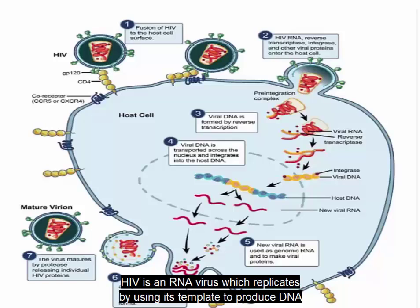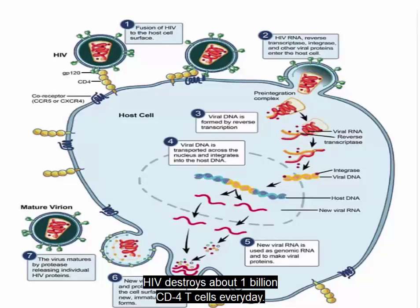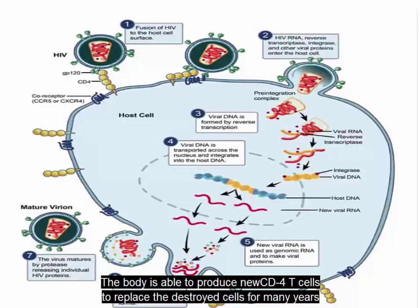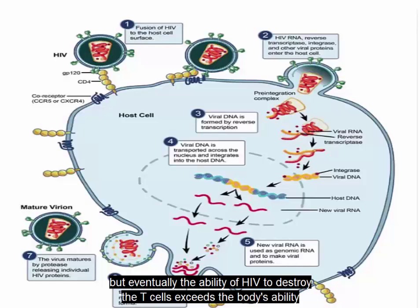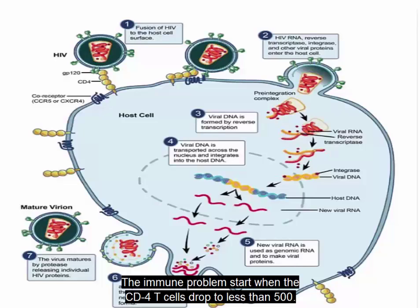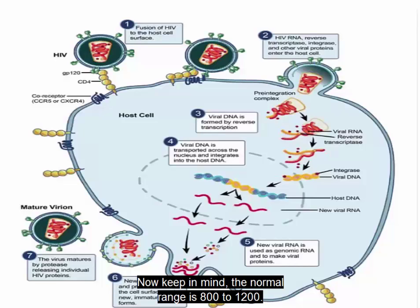HIV is an RNA virus, which replicates by using its template to produce DNA, which is then integrated into the human genome. HIV destroys about 1 billion CD4 T cells every day. The body is able to produce new CD4 T cells to replace the destroyed cells for many years, but eventually the ability of HIV to destroy the T cells exceeds the body's ability to replace them. The immune problems start when the CD4 T cells drop to less than 500; severe problems develop when it's less than 200.